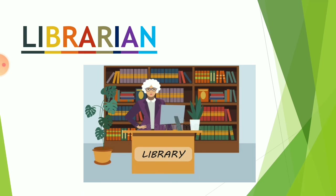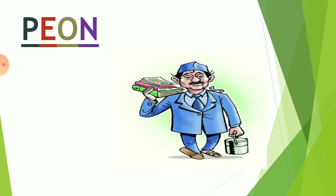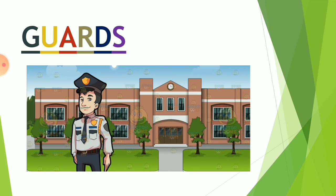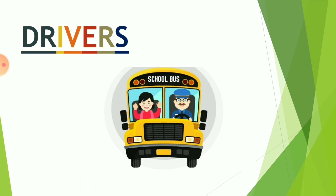The librarian works in the school library and helps us to choose and borrow books from the library. The peon rings the bell at the end of periods. Sweepers help to keep the rooms and playground clean. The guards at the school gates stop strangers from coming in. Drivers and their attendants help children travel safely to and from the school.